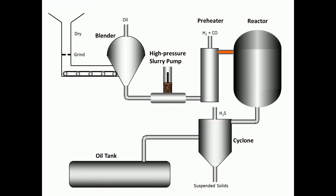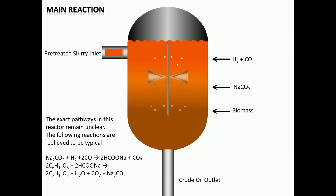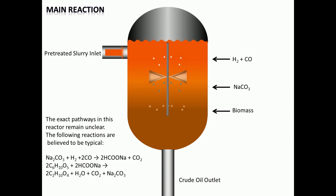The next step is the liquefaction reaction, which is carried out in a stirred pressure vessel. Reactions involved in the thermochemical conversion of biomass are complex, and it is difficult to determine exactly what reactions occurred during the liquefaction process. It takes place through a sequence of structural and chemical changes, which involves the following steps.